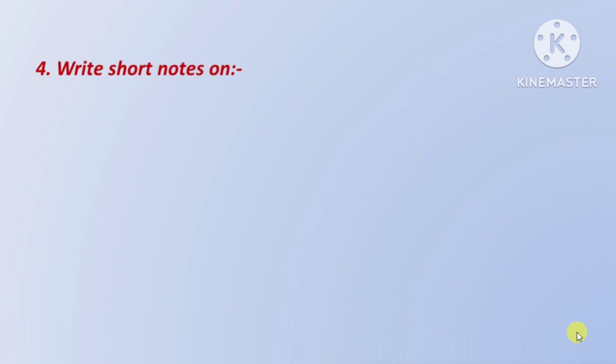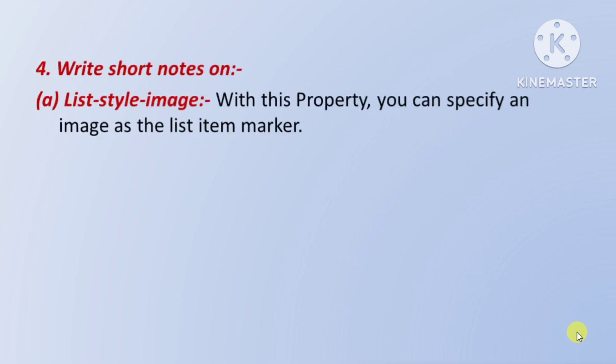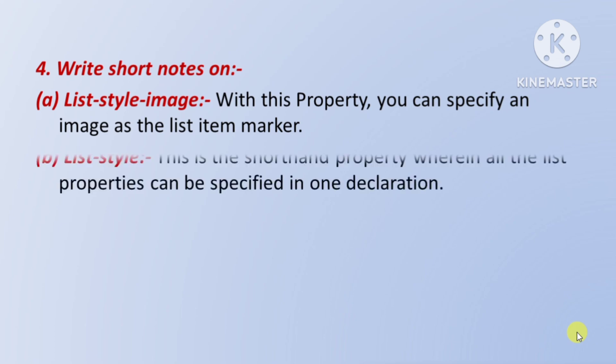Next question: write short notes on — first, list-style-image: with this property you can specify an image as the list item marker — is property ke saath aap ek image ko list item marker ke rup mein specify kar sakte hain. Next, list-style: this is the shorthand property wherein all the list properties can be specified in one declaration — yeh ek shorthand property hai jismein ek hi declaration mein sabhi list properties ko specify kar sakte hain.